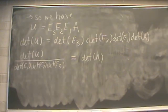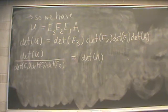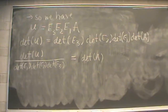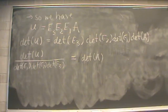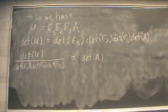Here's where theorem 1 comes into play. We started with matrix A, performed 3 elementary row operations to get to upper triangular matrix U. Taking the determinant of both sides of this equation, we get that the determinant of U equals the determinant of our three elementary matrices multiplied together times the determinant of A. So to simplify, the determinant of A equals the determinant of that upper triangular matrix divided by the determinants of all of our elementary matrices. Next we're going to create those elementary matrices, find their determinants, and then find the determinant of U.